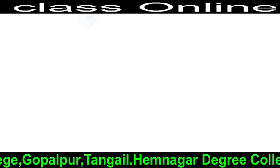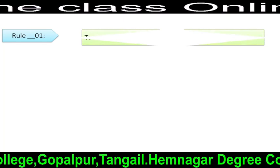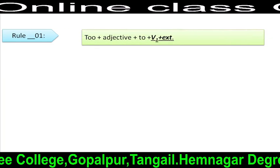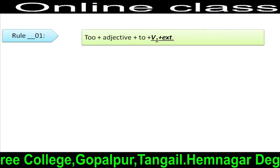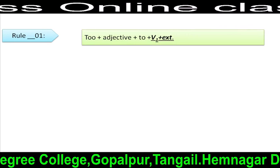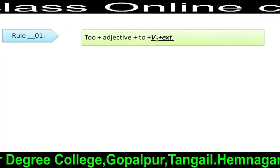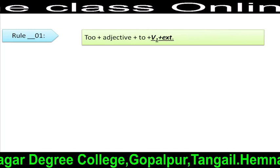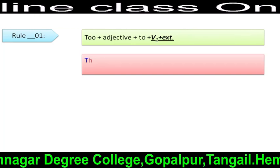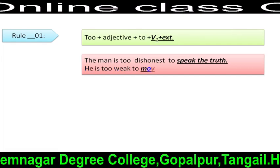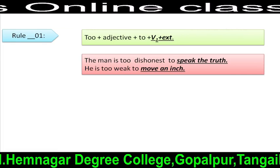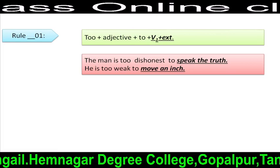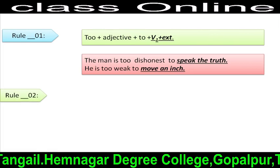Rule 1: Too + adjective + to + V1 + extension. That means, after 'too', you have to use the base form of the verb along with other words to complete the incomplete sentence. For example: 'The man is too dishonest to speak the truth.' 'He is too weak to walk.'